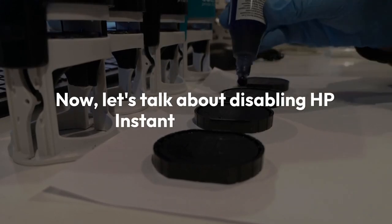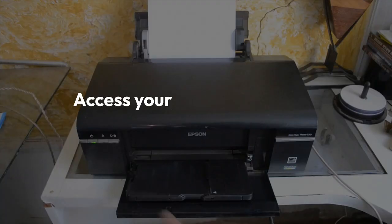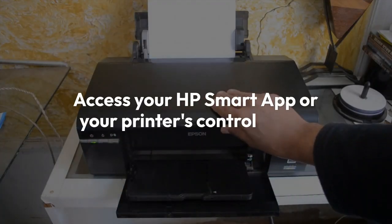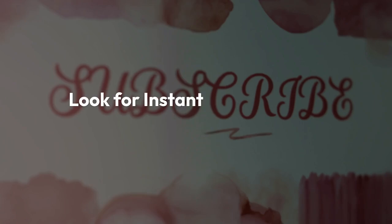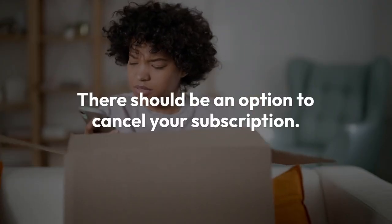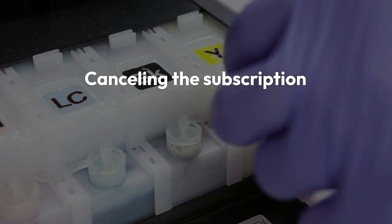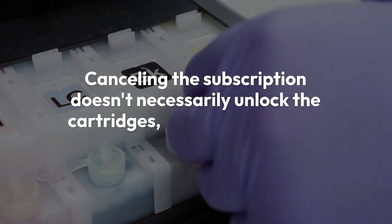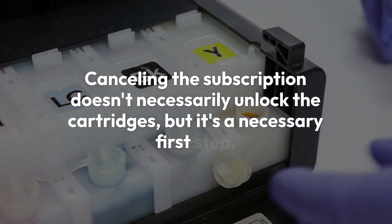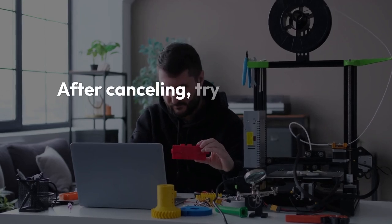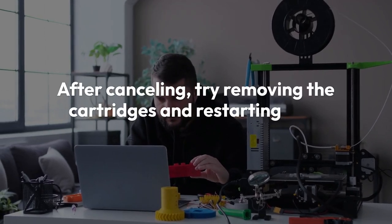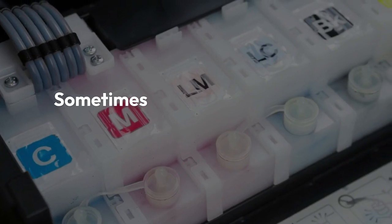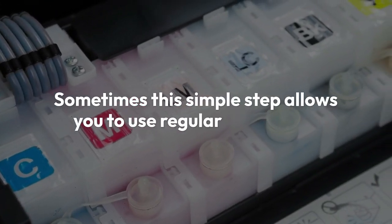Now let's talk about disabling HP Instant Ink directly. Access your HP Smart App or your printer's control panel. Look for Instant Ink or HP Plus settings. There should be an option to cancel your subscription. Canceling the subscription doesn't necessarily unlock the cartridges, but it's a necessary first step. After cancelling, try removing the cartridges and restarting your printer. Sometimes this simple step allows you to use regular cartridges.